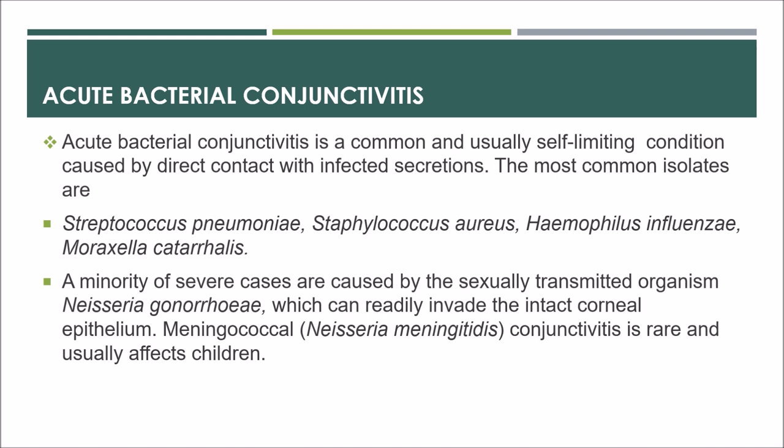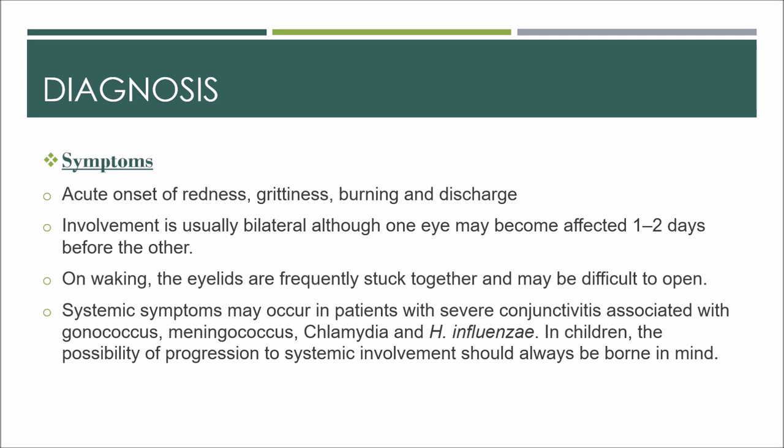Meningococcal conjunctivitis is rare and usually affects children. Diagnosis is based on symptoms, signs, and investigations. Symptoms include acute onset of redness, grittiness, burning, and discharge. Involvement is usually bilateral, although one eye may become affected one to two days before the other. On waking, the eyelids are frequently stuck together and may be difficult to open. Systemic symptoms may occur in patients with severe conjunctivitis associated with gonococcus, meningococcus, chlamydia, and Haemophilus influenzae in children — the possibility of progression to systemic involvement should always be borne in mind.